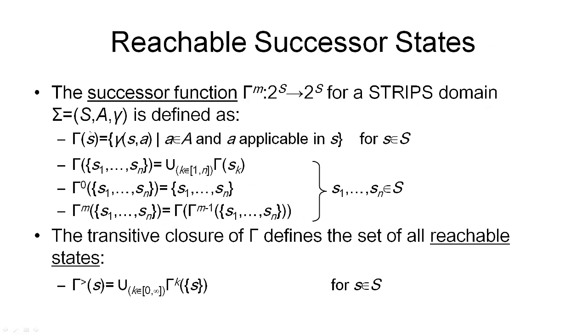The successor function gamma of S for a single state is defined here. It is the set of all states gamma S A for all actions A that are applicable in this state S. So this set consists of all those states that can be reached by an applicable action from our state S.